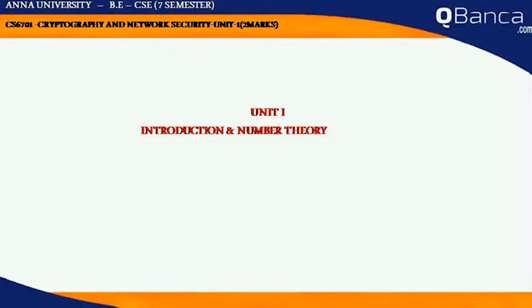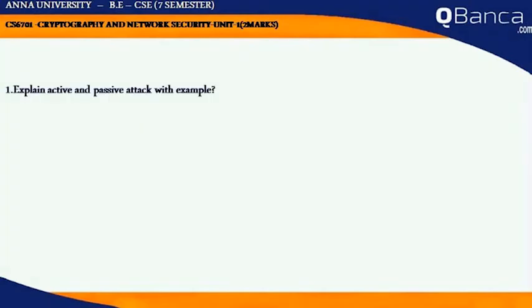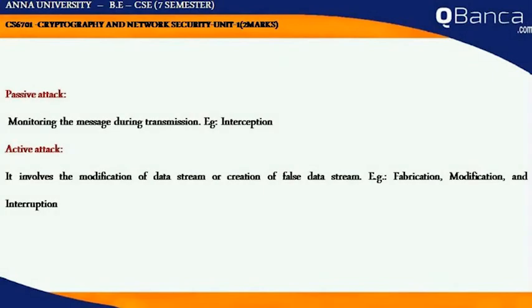CS6701 Cryptography and Network Security, Unit 1: Introduction and Number Theory. Passive Attack involves monitoring the message during transmission. Example: Interception. Active Attack involves the modification of data stream or creation of false data stream. Examples: Fabrication, Modification, and Interruption.